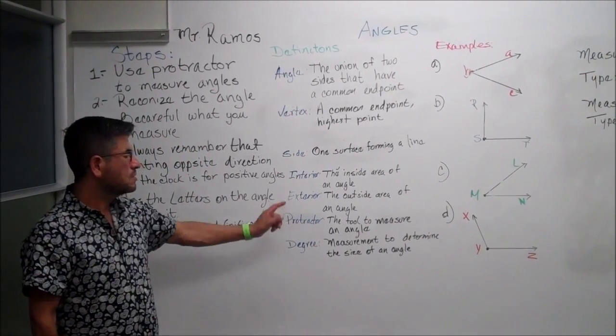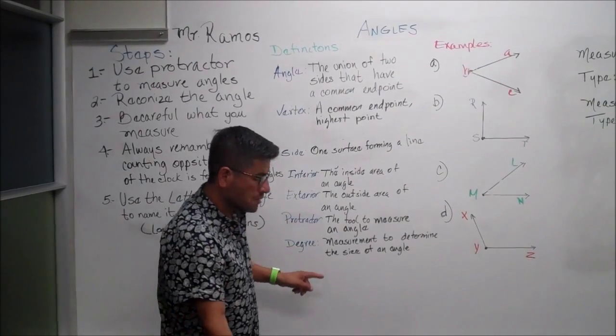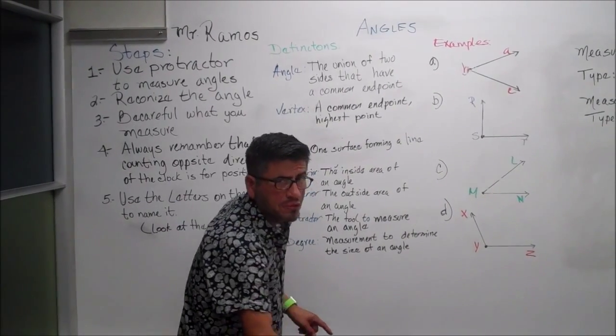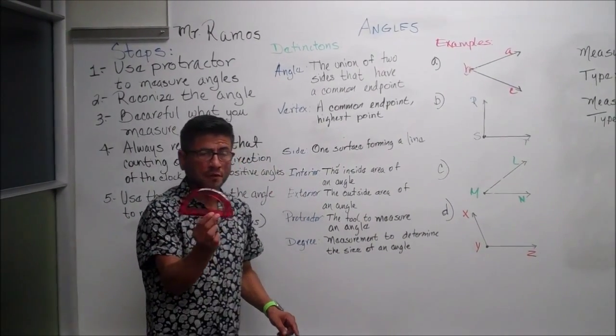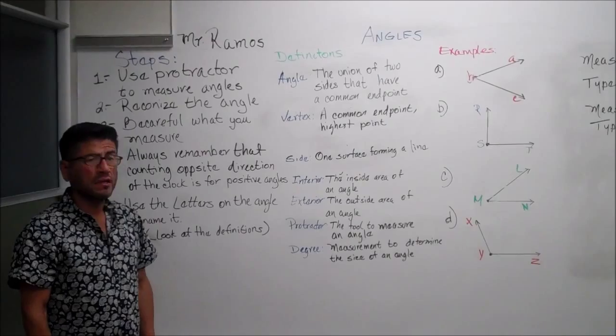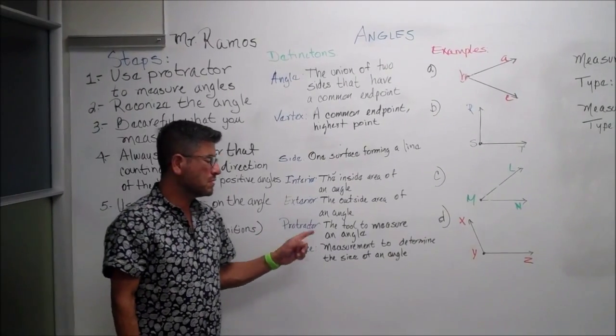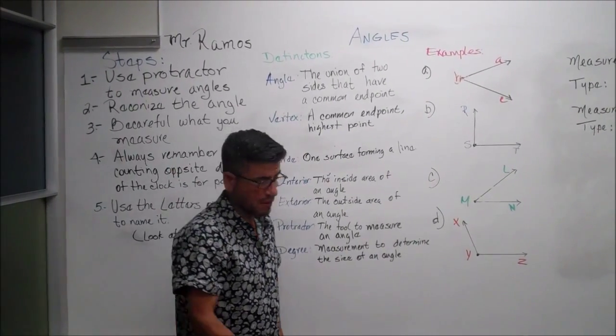Protractor: is the tool that measures the angle, which is this one right here. And degree: is the measurement to determine the size of the angle.